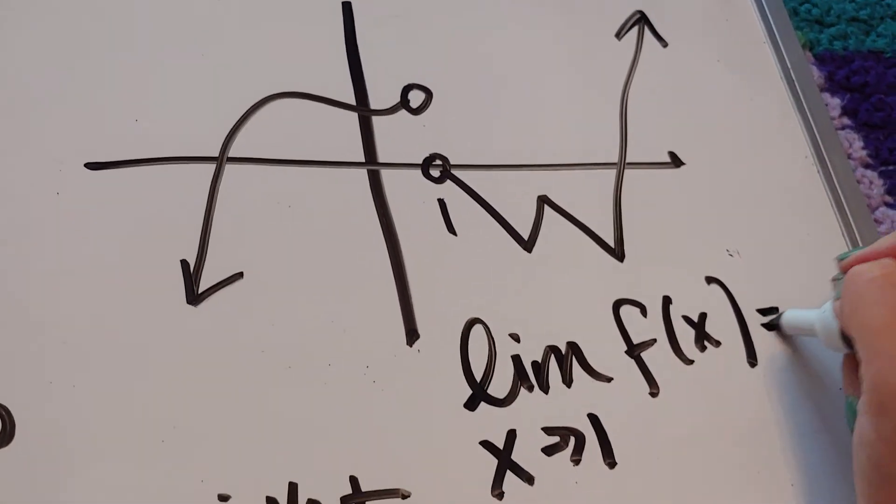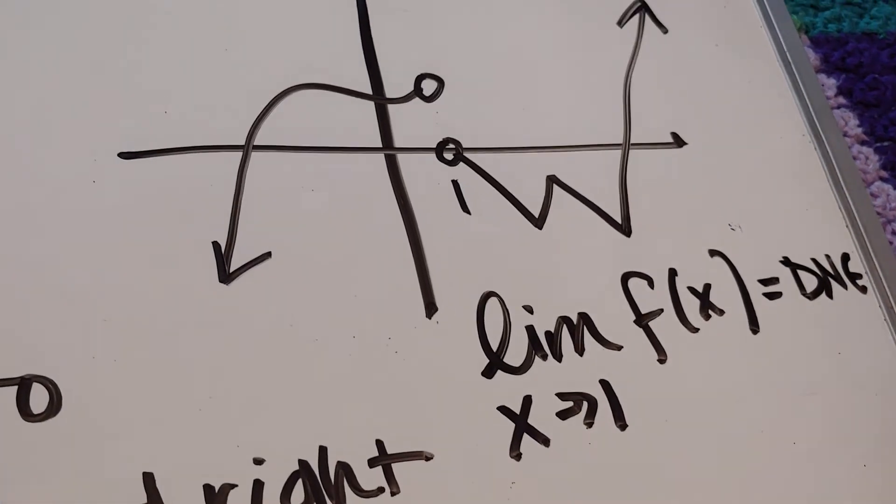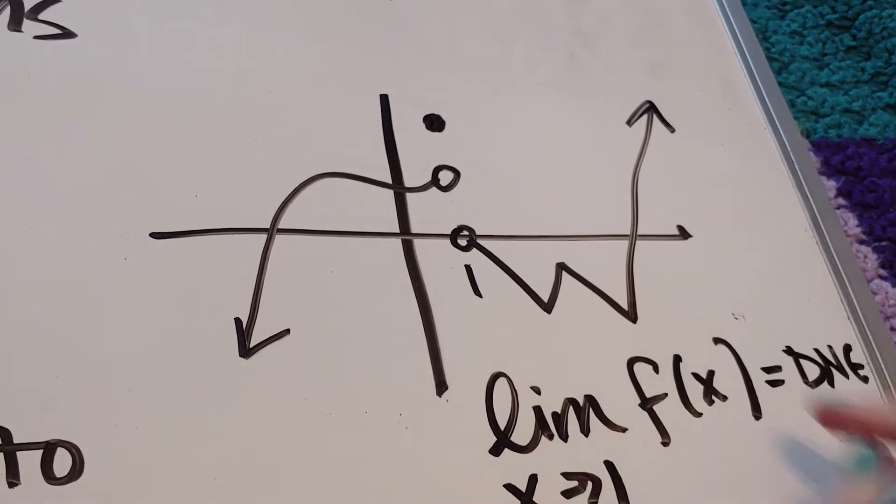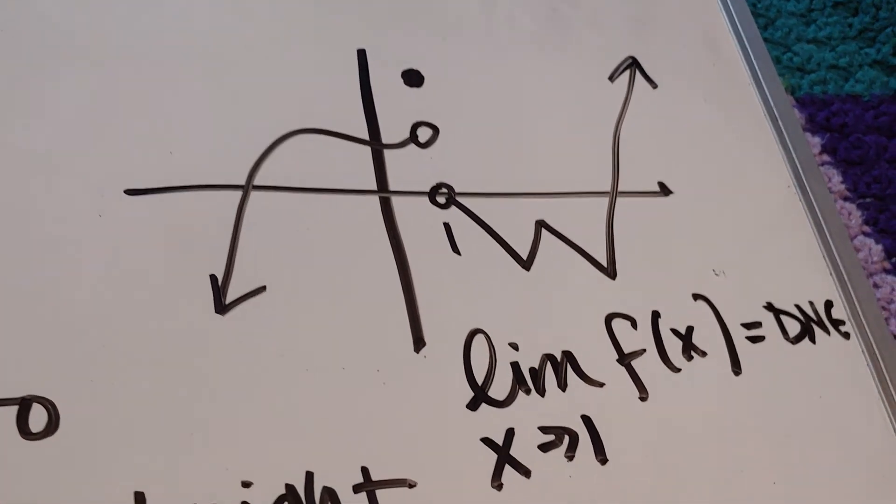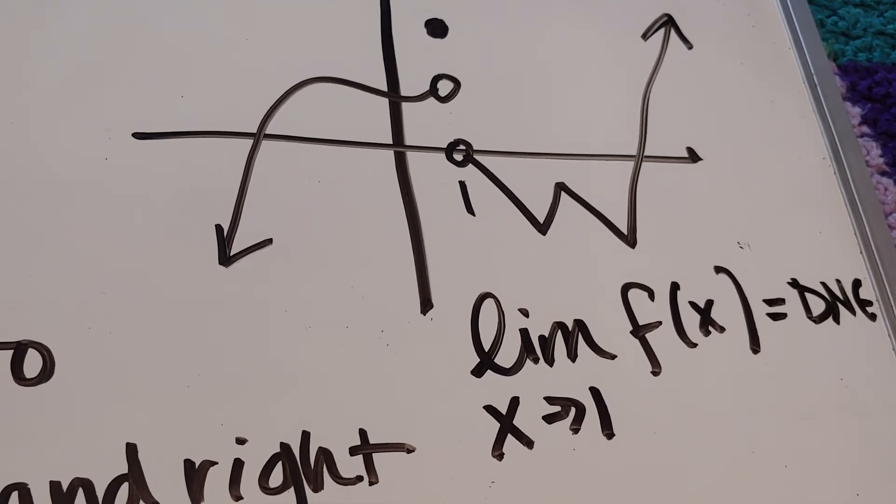If there's a jump, we're done, guys. It does not exist. By the way, if there was another floating dot, don't care. It's still broken. It does not exist. So the limit as you're approaching a jump is does not exist.